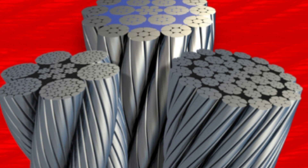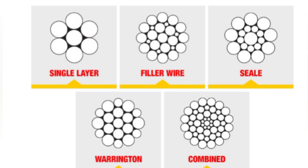There are four basic components that make up the design of a finished wire rope: wires made from metal that form a singular strand; multi-wire strands laid around a core in a helical pattern; a fiber or steel core; and lubrication.